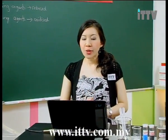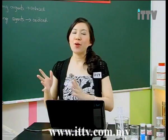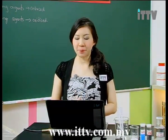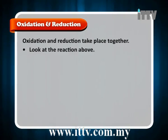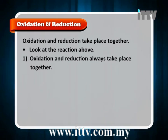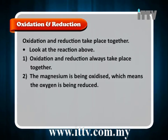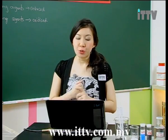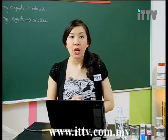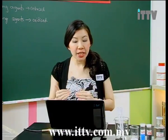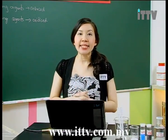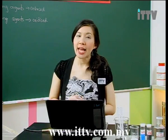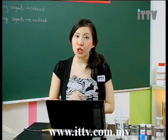In this case, copper(II) oxide is reduced, therefore it is acting as an oxidising agent. Oxidation and reduction take place together — they always occur simultaneously. For the first example, magnesium is being oxidised, which means the oxygen is being reduced. The reducing agent will be oxidised, and in this case magnesium is being oxidised, therefore magnesium is the reducing agent.